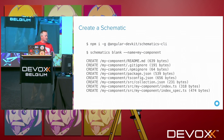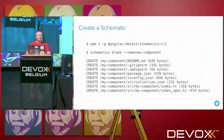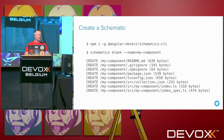To begin, you install the schematics CLI with npm install -g, and then use that CLI to create a new project. In this case I'm creating a blank project called my-component. It creates about eight files: a README, .gitignore, .npmignore — and the npmignore is one you should be very aware of, as it bit me for hours one day. There's also a package.json, tsconfig, because Angular uses TypeScript by default, and then a collection, an index, and a test.